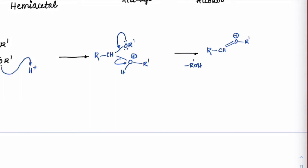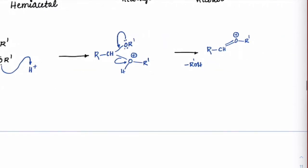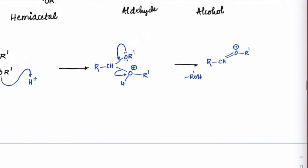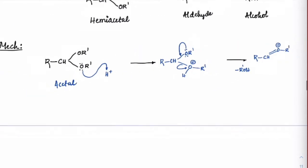Thereby we have RCH double bond OR with a positive charge, and that OR group has left as R'OH. This is the first step: protonation happens, then the lone pair supports double bond formation, making that group a good leaving group, and it comes out as alcohol. So the first mole of alcohol has already been released.